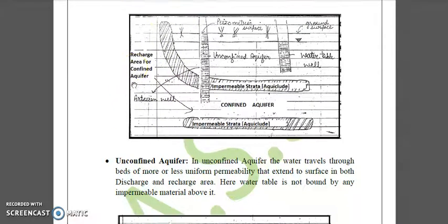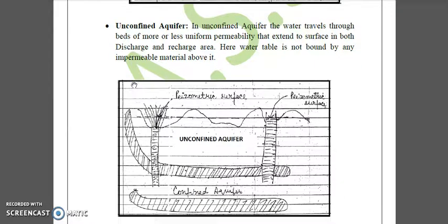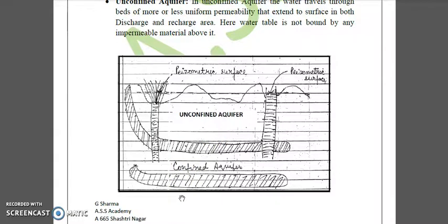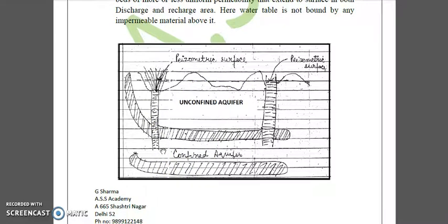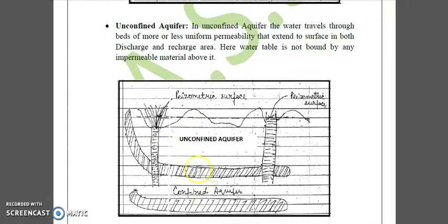The second type is the unconfined aquifer. Here, water travels through beds of more or less uniform permeability that extend to the surface in both discharge and recharge areas. The water table is not bound by any impermeable material above it — there is no aquiclude at the top, only below.